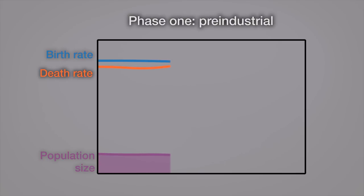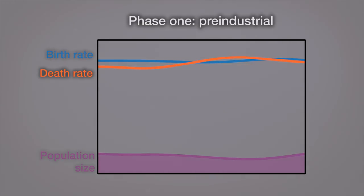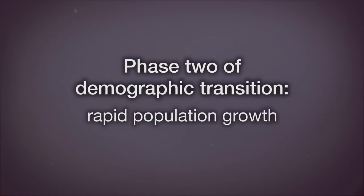The country experiences slow or no growth or might even lose population because the crude birth rate and the crude death rate are very close together, and sometimes the crude death rate is greater than the crude birth rate. But over time, the country works its way into phase two, rapid population growth.